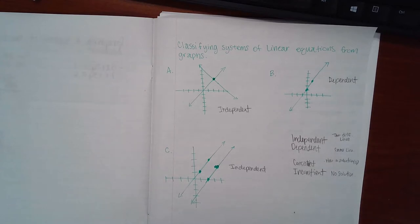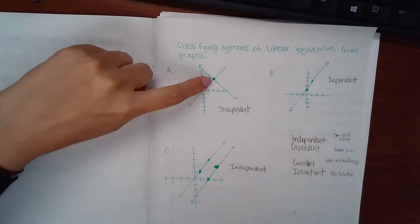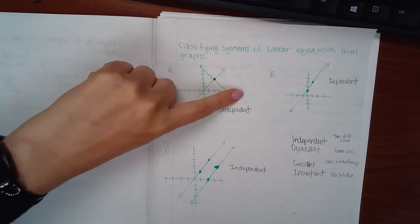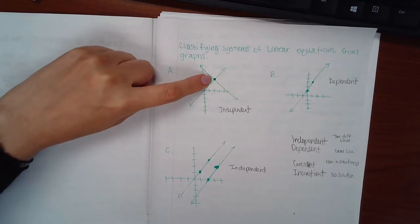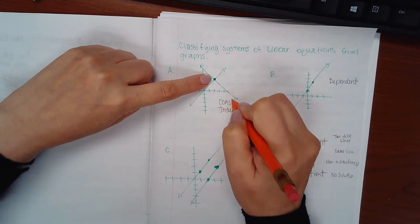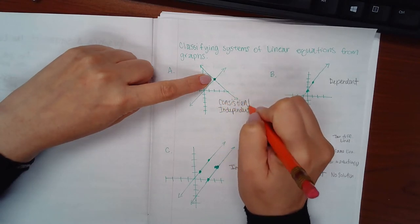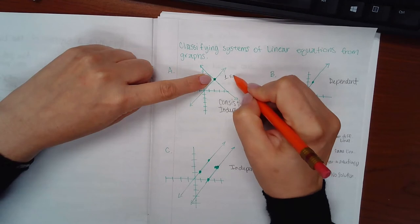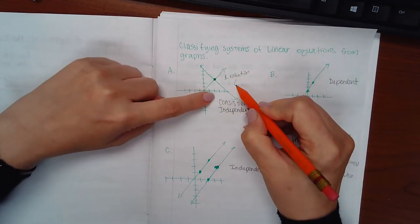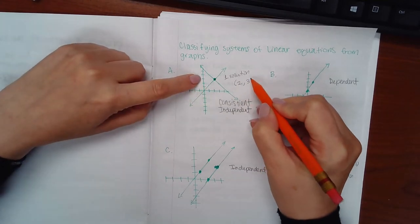Here you have one solution. These two lines only touch once, right there, so there is a solution, so this is called consistent. It's just one solution, and that one solution happens to be the coordinates 2 for x and 3 for y. This is the one and only solution.